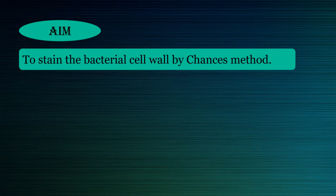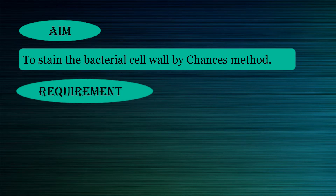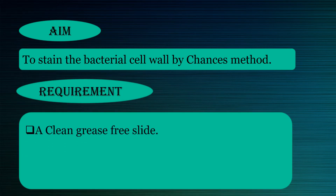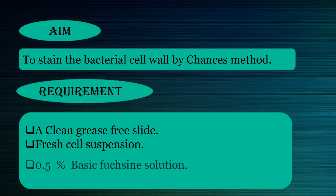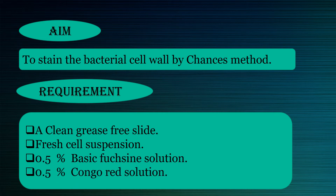Our aim is to stain the bacterial cell wall by Chance method. The requirements include: a clean grease-free slide, fresh cell suspension, 0.5% basic fuchsine solution, and 0.5% Congo red solution.